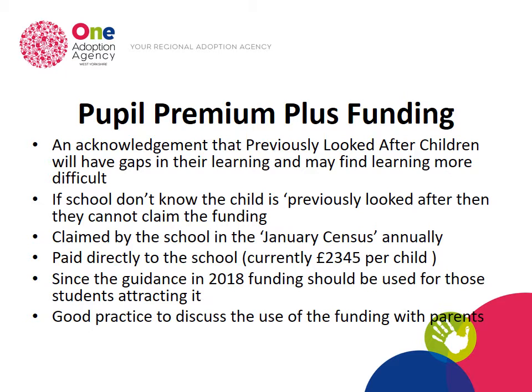Since the guidance came out in 2018, it says that the funding should be used for those children attracting it. It's not a personal budget for every child and schools are not accountable for every single penny of how they spend it on your child, but it is an acknowledgement that that group of children may have gaps in their learning and additional things may need to be put in place. It also says that it's good practice to discuss the use of Pupil Premium Plus with parents.